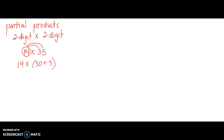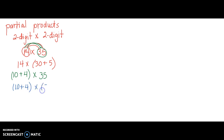We could also write this as 35 times the 1 in the tens place — 10 — and 35 times the 4 in the ones place, or 35 times 10 plus 4. You'll recognize 10 plus 4 is the expanded form of 14. That means we can take 10 plus 4, the expanded form of 14, and multiply that by the expanded form of 35 to get the product of 14 times 35. So let's do that using the partial products method.